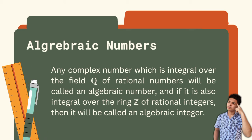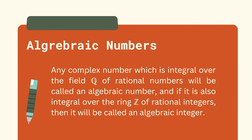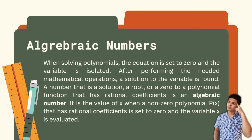Here is another definition of algebraic numbers. An algebraic number is any complex number which is integral over the field of rational numbers. If it is also integral over the ring of rational integers, then it will be called an algebraic integer. When solving polynomials, the equation is set to 0 and the variable is isolated. After performing the needed mathematical operations, a solution to the variable is found. A number that is a solution, a root, or a zero to a polynomial function that has rational coefficients is an algebraic number.